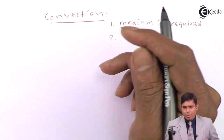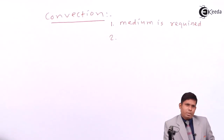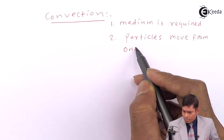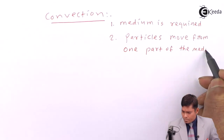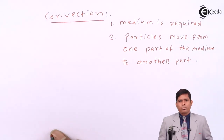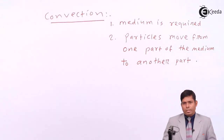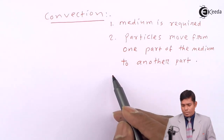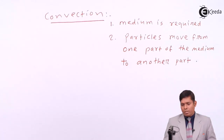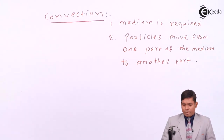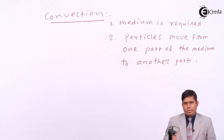In convection, the particles of the medium can move from one place to another. It is the mode of transfer of heat where particles move from one part of the medium to another, carrying their energy and transferring it to other particles. That transfer takes place physically.